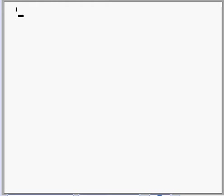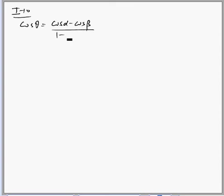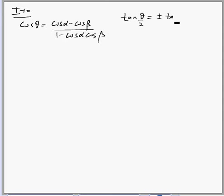Illustration 10th of Trigonometry. Now the given is cos θ equals cos α minus cos β over 1 minus cos α cos β, and what we are supposed to show is tan(θ/2) equals tan(β/2).